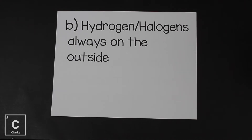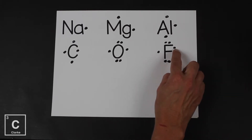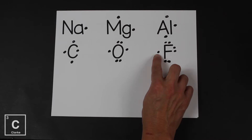The opposite of that: hydrogen and halogens are always on the outside. Hydrogen has one valence electron, and halogens only have one available bonding site. Look at fluorine — it's a halogen. Several pairs can't bond, leaving only one bonding site. So if you only have one bonding site, like hydrogen and halogens, you've got to be on the outside.